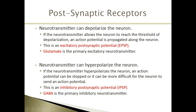A neurotransmitter can either depolarize or hyperpolarize a neuron. If it depolarizes the neuron, when the neurotransmitter opens those ion channels, positive ions move into the neuron. If it hyperpolarizes the neuron, those ion channels, when they open, either remove positive ions or let a negative ion in.